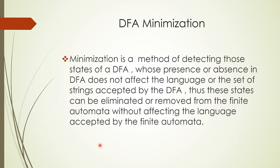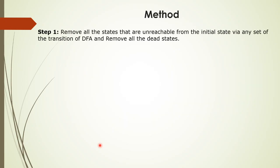Now let's look at the steps followed to minimize a DFA. The first step is to remove all the states that are unreachable from the initial state via any set of transitions of the DFA, and also remove all dead states.